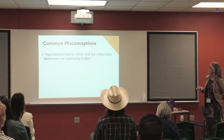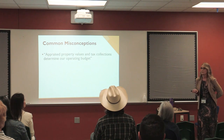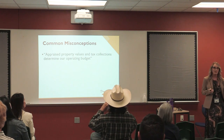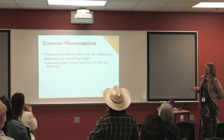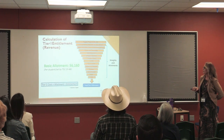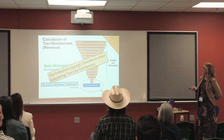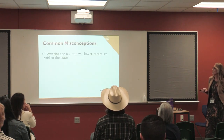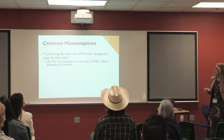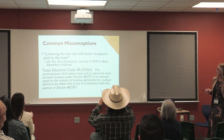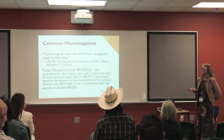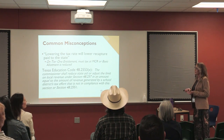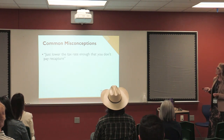Some common misconceptions: first, that property values and tax collections determine our operating budget — they don't. Our operating budget is determined by the tier one entitlement, which is based on students. Tax collections aren't in those formulas; they're about how you fund the entitlement. Second misconception: lowering the tax rate will lower recapture. At tier one, you must tax at the MCR, or the commissioner shall reduce state aid or adjust the limit on local revenues if you're not in compliance. The state doesn't want you gaming the system by lowering your rate to make the state pay more.